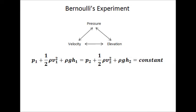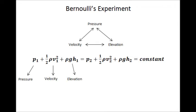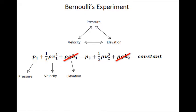The equation looks like such, where there is a pressure term, velocity term, and an elevation term. But because the experiment will be performed on a horizontal plane, the elevation terms can be crossed out.